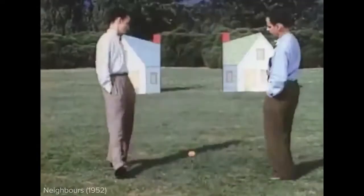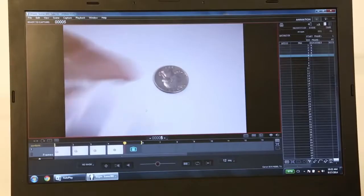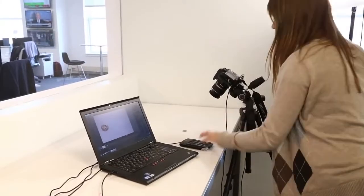Objects, clay, puppets, and even people can be animated. The principles are always the same. Place something in front of a camera and take a picture. Move it slightly and take another picture. Do this a bunch more times.